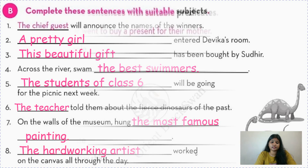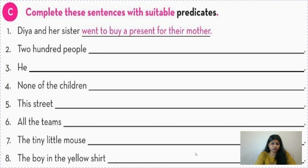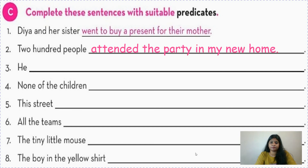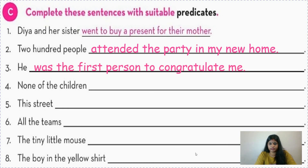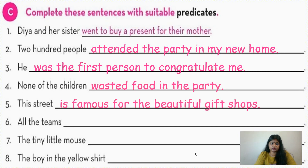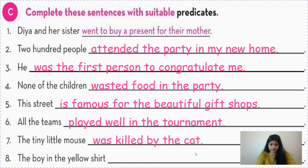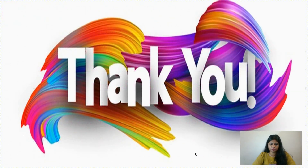For question six, the subject is already given and you have to fill suitable predicates. The first one is done for you: 'Dia and her sister went to buy a present for their mother.' For the rest, I have written: '200 people attended the party in my new home'; 'He was the first person to congratulate me'; 'None of the children wasted food in the party'; 'This street is famous for beautiful gift shops'; 'All teams played well in the tournament'; 'The tiny little mouse hid itself in the hole'; 'The boy in the yellow shirt is my younger brother.' You can write your own answers.